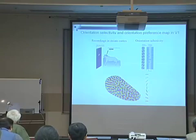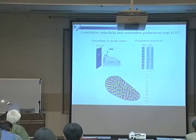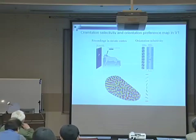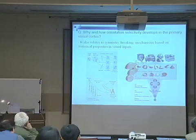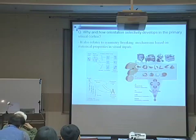The neurons in layer 4 have the orientation preference for these horizontal images. We can ask why and how orientation selectivity develops in the primary visual cortex area.